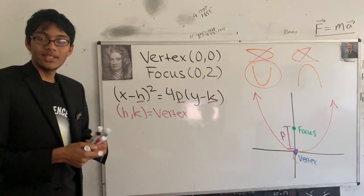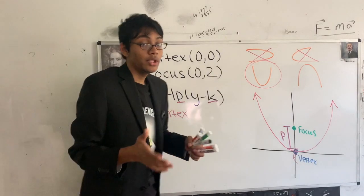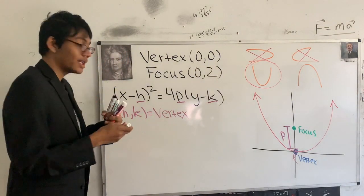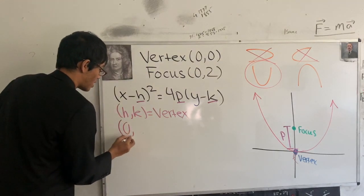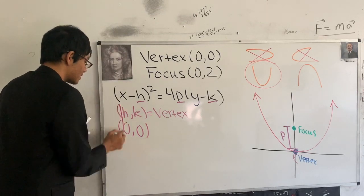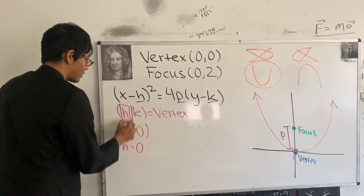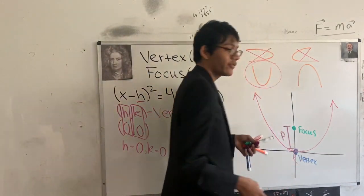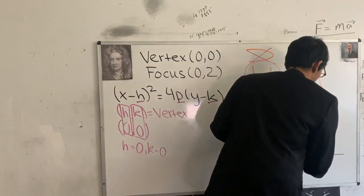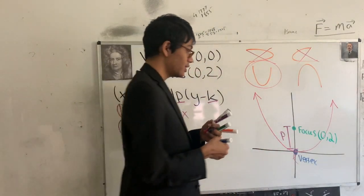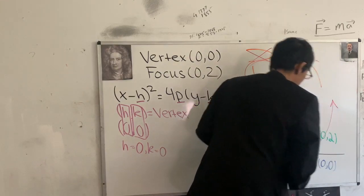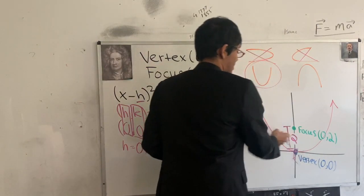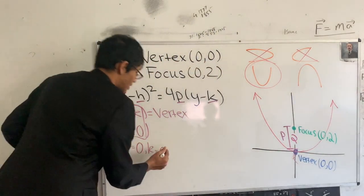Do we know any of these key pieces of information? Yes, we do. We know the vertex is at the origin (0, 0), so h = 0 and k = 0. We also know the focus is at (0, 2) and the vertex is at (0, 0), so the distance from our focus to our vertex is 2. Our focus is two units away from our vertex, so p = 2.